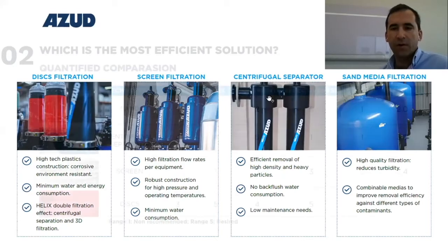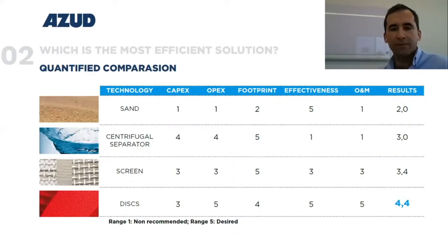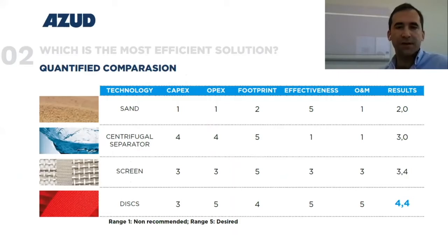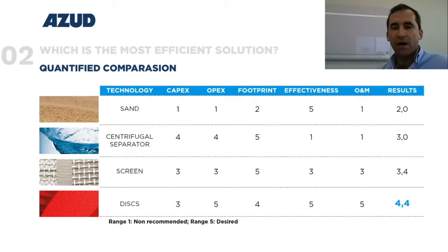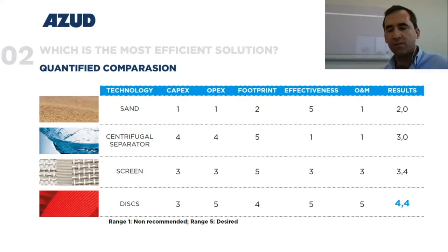We made a scoring table where we compare the main parameters, such as capital expenses, operational expenses, footprint effectiveness, and operation and maintenance. The most important parameters are, first, effectiveness, and second, operational expenses. Media filters and disc filters are probably the best, mainly because they have in-depth filtration where they can trap even smaller particles than their rated filtration degree.